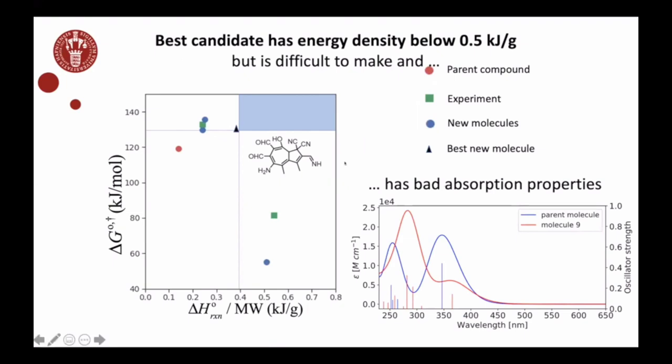The best molecule out of all of those is this one. It has a reasonably large barrier to the back reaction, so we think the lifetime of this would actually be quite long. But the storage density is still kind of disappointingly low, about 0.38 or 0.4 kilojoules per gram.